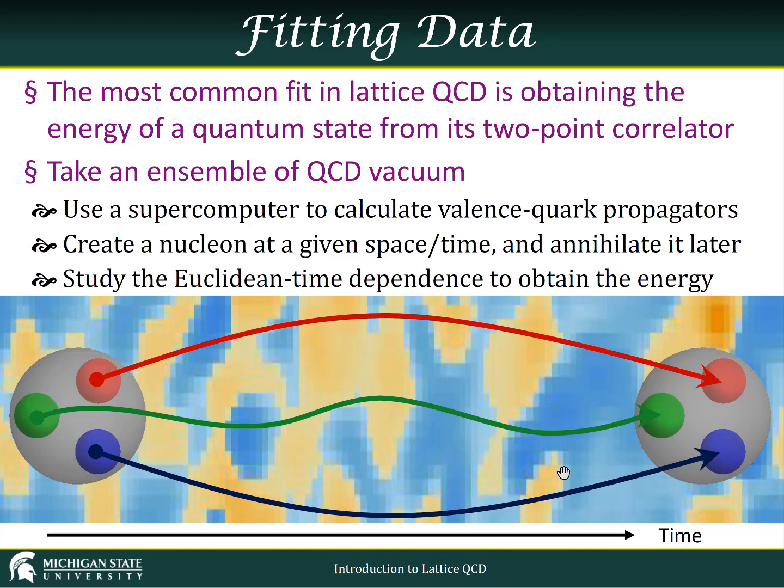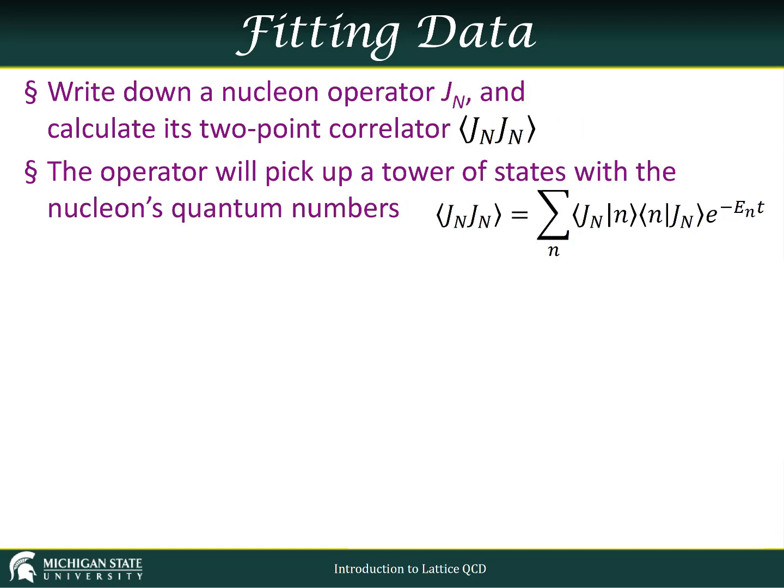Take an operator to create a nucleon at some given space-time location. We allow it to propagate through this lattice, that is by using our valence quark propagators, and then we annihilate it at some later time. Now looking at the Euclidean time dependence of this two-point correlator, we'll be able to extract the energy. And the reason for that is pretty simple.